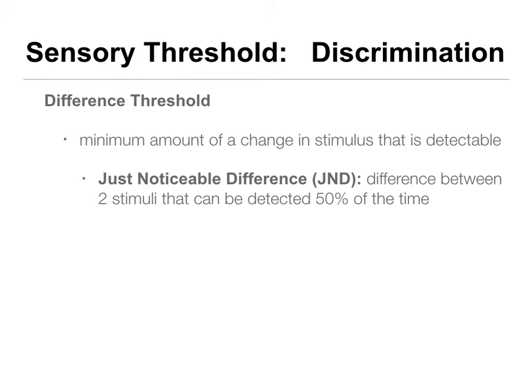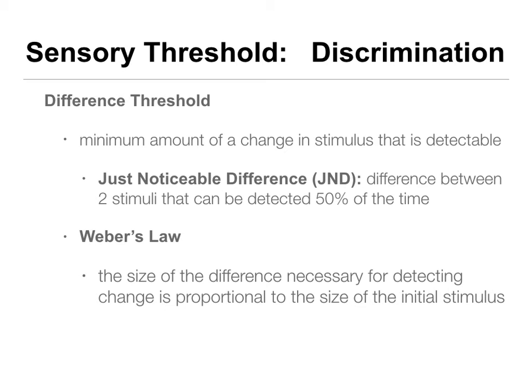The just noticeable difference is the difference between two stimuli that can be detected 50% of the time - our operational definition. Weber's Law says that the size of the difference needed to detect a change is proportional to the size of the initial stimulus. If the stimulus is really big, you need a bigger change to detect a difference.